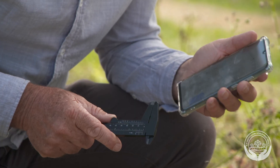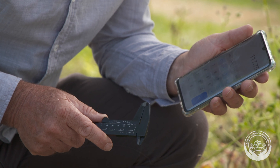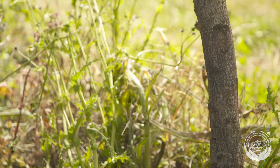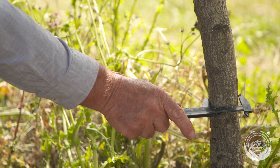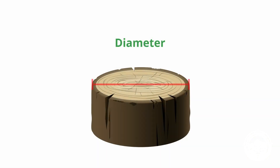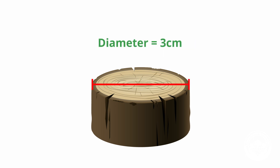We measure the trunk cross-sectional area with two tools – a pair of calipers and a calculator, often found on a cell phone. First, measure the diameter of the trunk 20 centimetres above the graft union. Record the diameter in centimetres. From that measurement, find the radius, which is half of the diameter. In this example, the diameter of the trunk is 3 centimetres, so the radius is 1.5 centimetres.